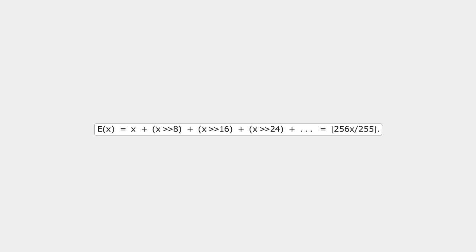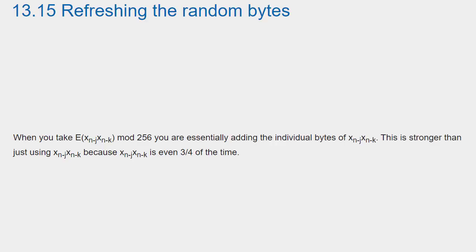The function e(x) is defined as follows. When you take e(x_n minus j, x_n minus k) mod 256, you are essentially adding the individual bytes of x_n minus j and x_n minus k. This is stronger than just using x_n minus j times x_n minus k, because x_n minus j times x_n minus k is even three quarters of the time.